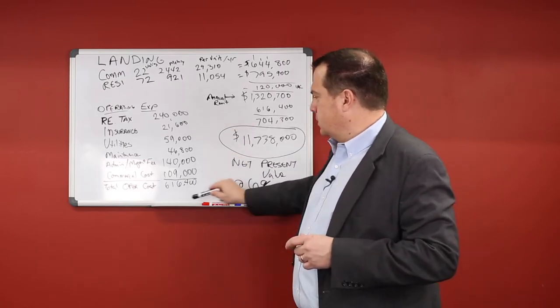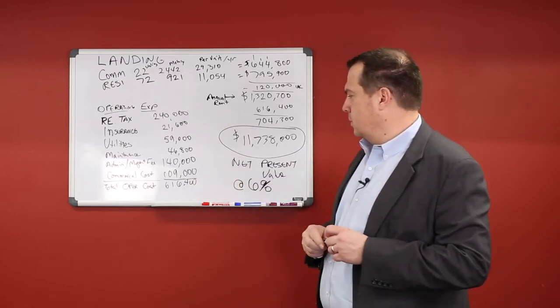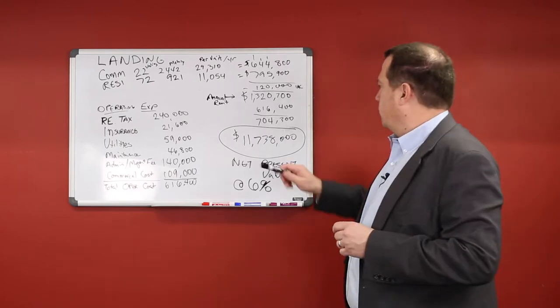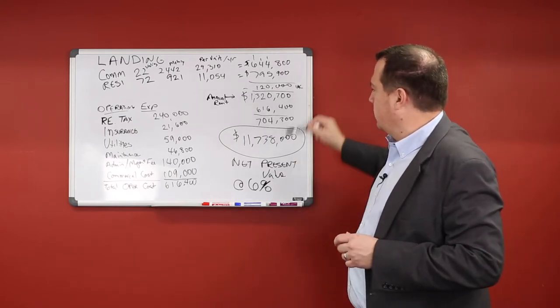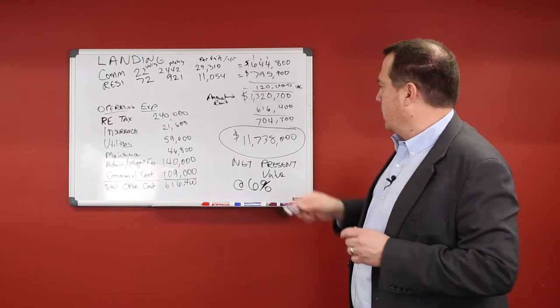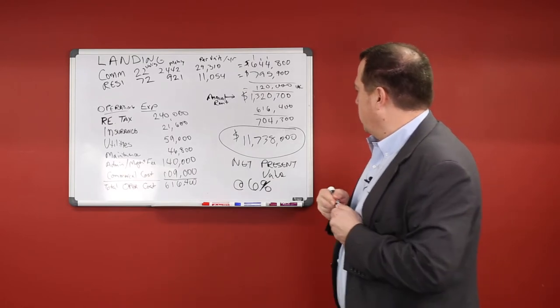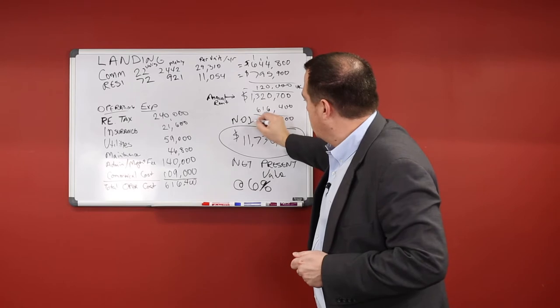what they would give to commercial real estate agents that are filling the commercial units, that type of stuff. These are all expenses. They came to just over $616,000. So you subtract that from the rents, and that gets you your net operating income, which is the $704,000 there.